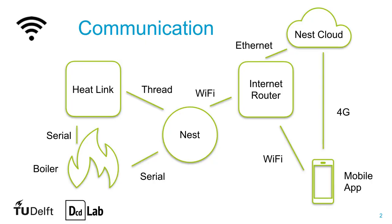For the Nest thermostat, the communication looks like that. In the middle, the Nest connects to the household's Internet router via Wi-Fi, from which it can communicate with the Nest cloud through the Internet. The Nest mobile app can interact with the Nest via the Nest cloud or directly through the Wi-Fi network.